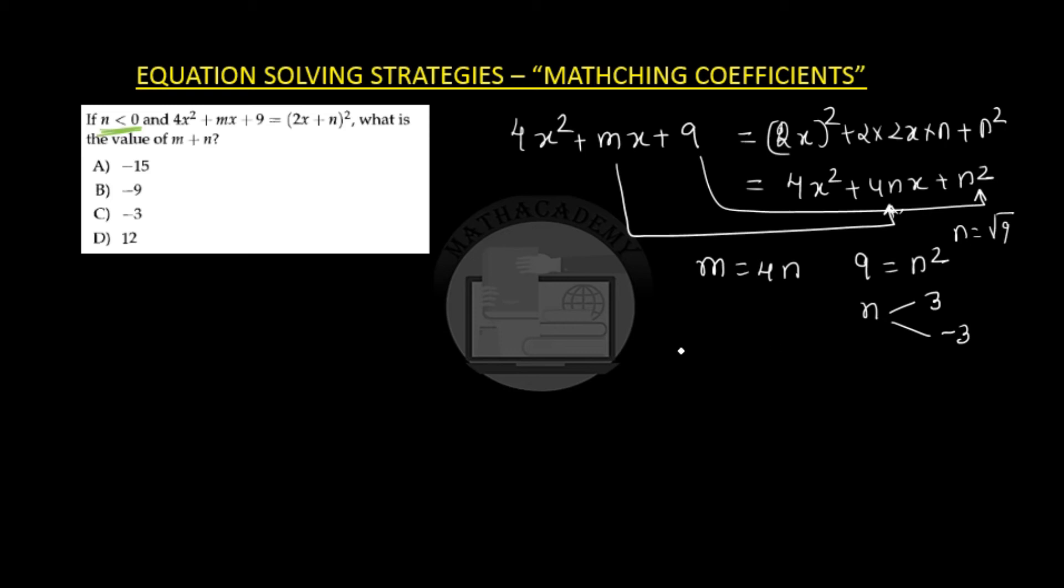We only want n which is lesser than 0. Hence we discard this value and we take n as negative 3.